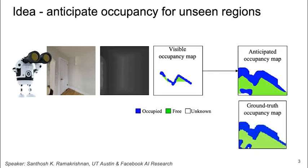For example, the area immediately around the agent is usually free space, the pathway to the left is likely to lead to a corridor, and the wall is likely to continue further to the right.